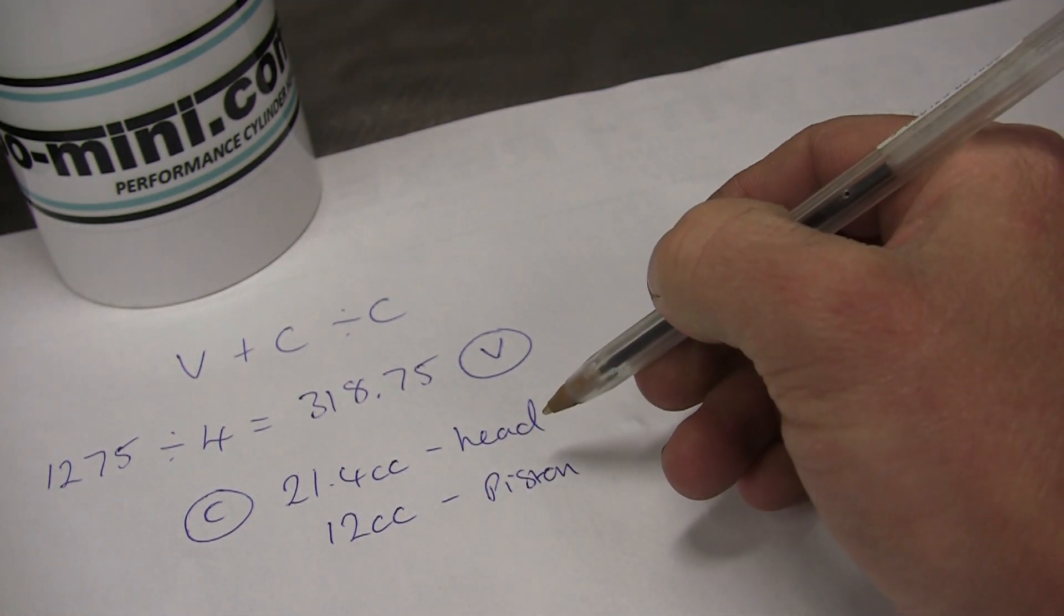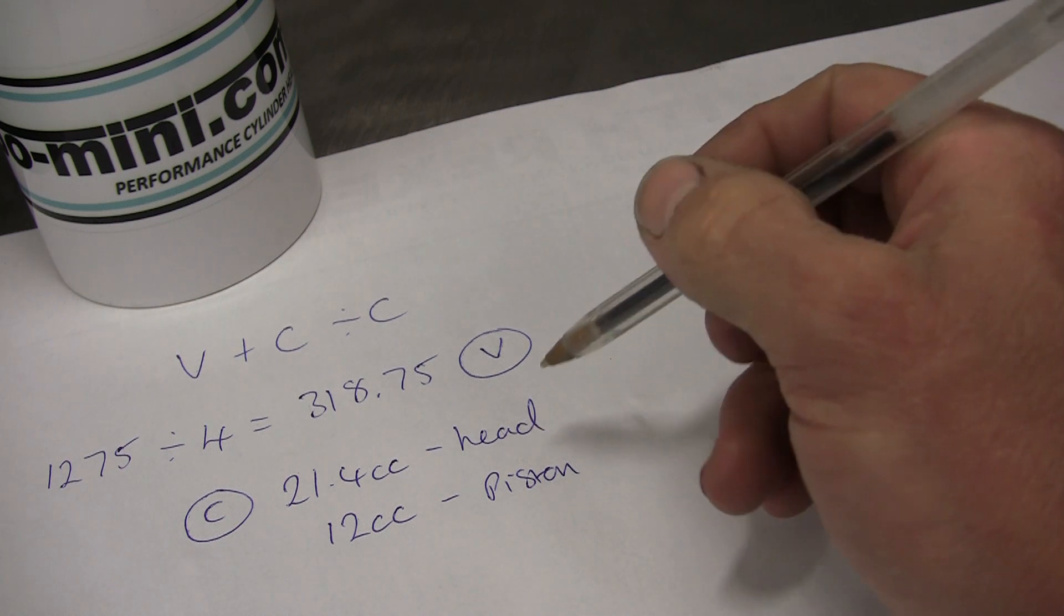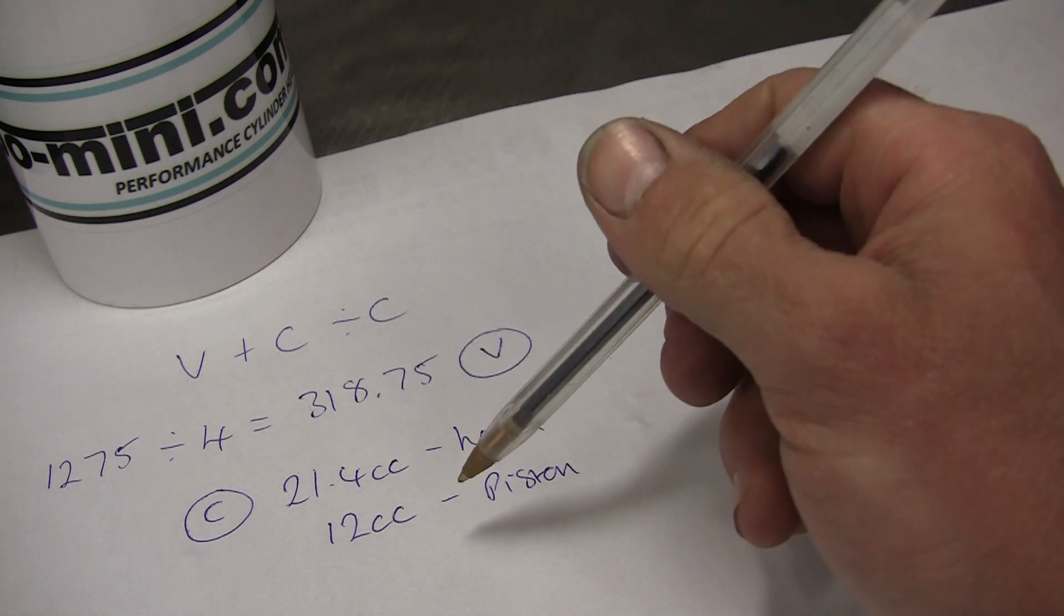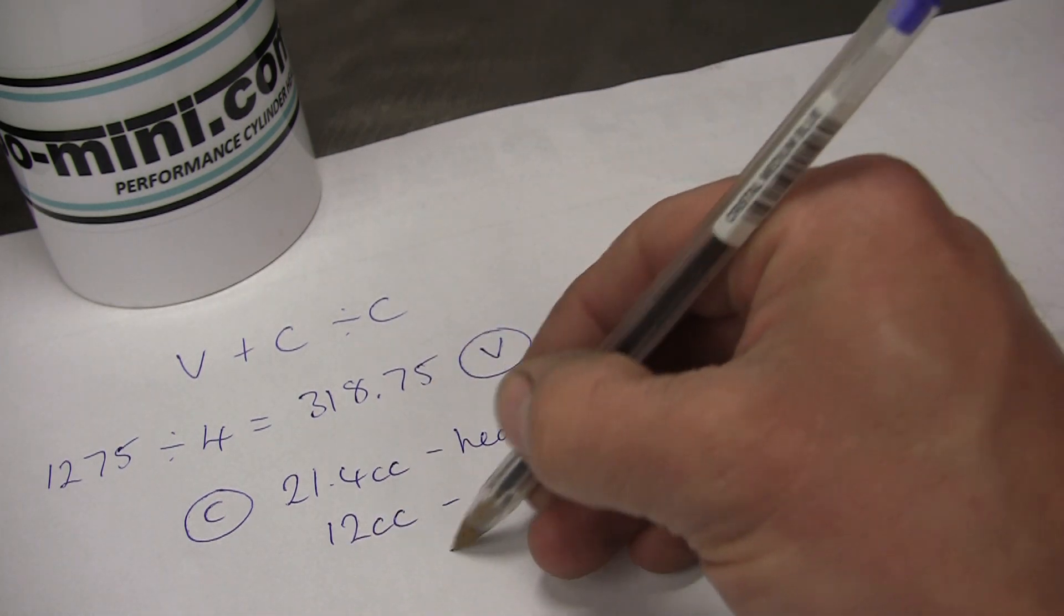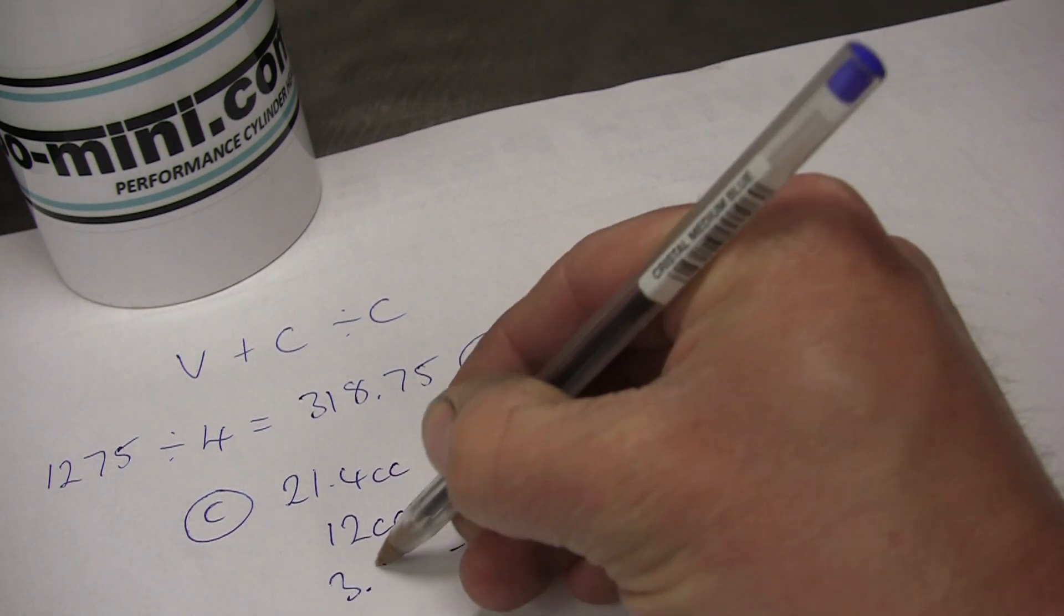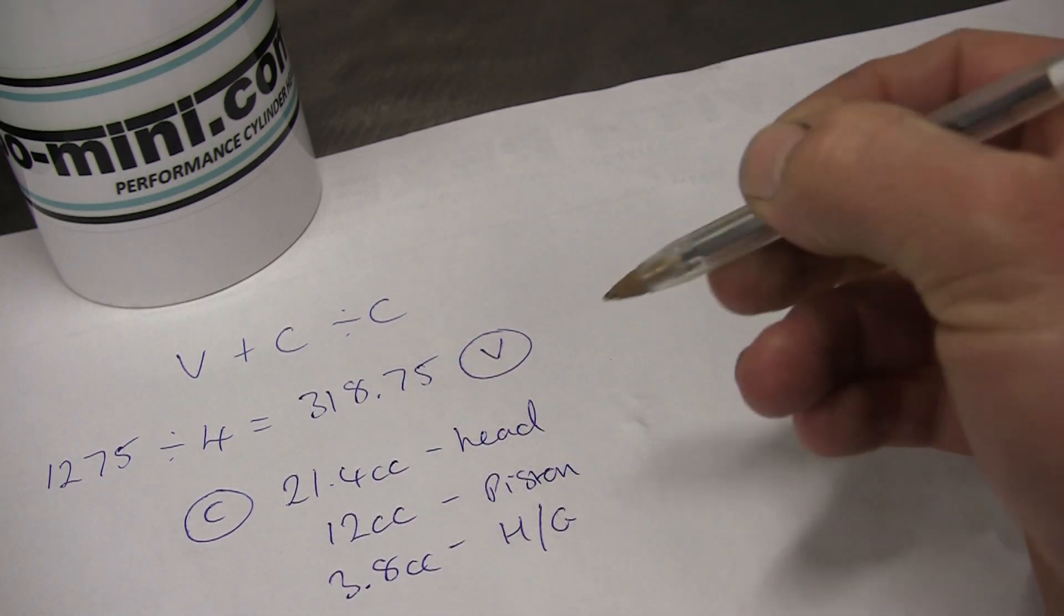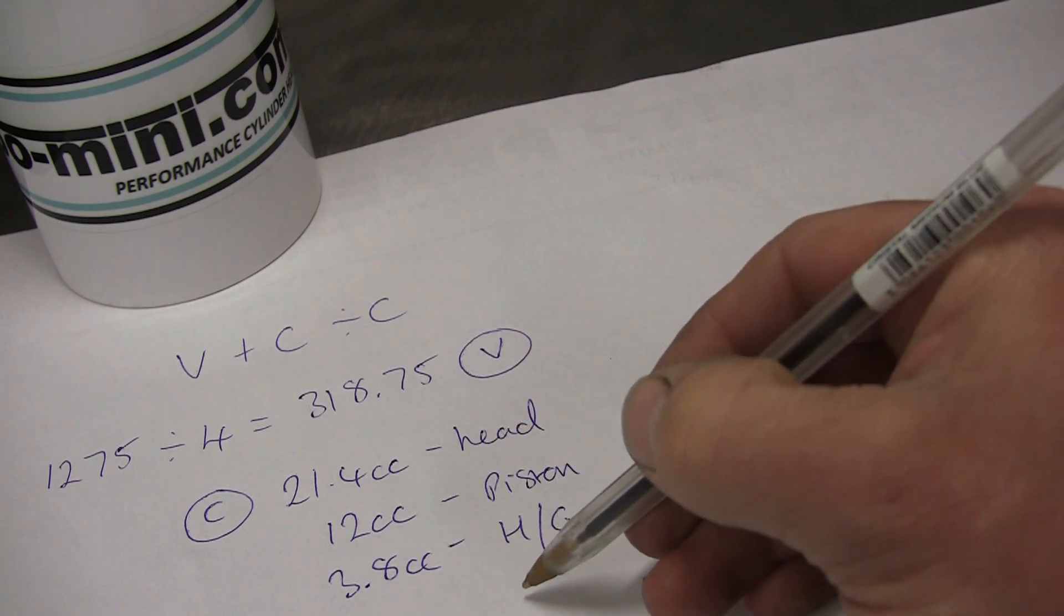We'll assume a standard Metro turbo piston, so 12 cc for that. Again, you can measure that the same way you measure the cylinder head—with a bit of perspex over the dish of the piston and fill that. We'll go with a Metro turbo, so 12 cc. Then a BK 450 head gasket, which is 3.8 cc.